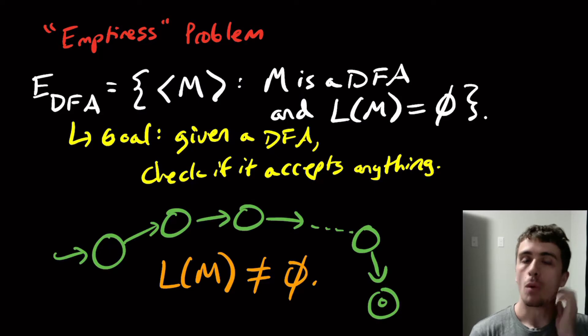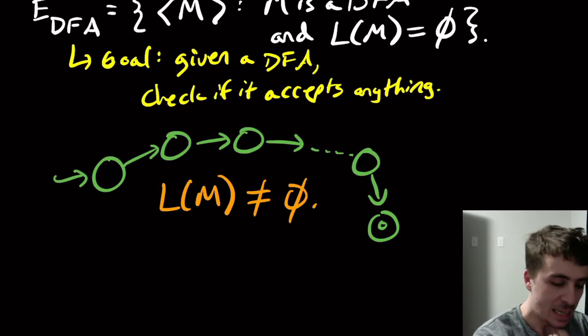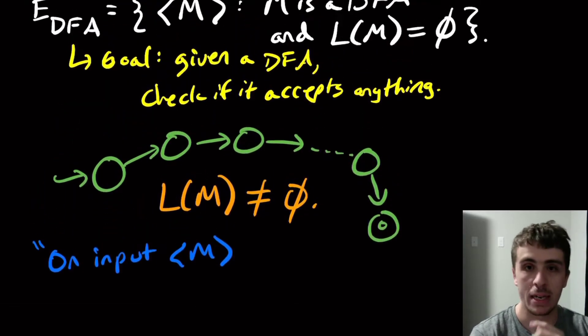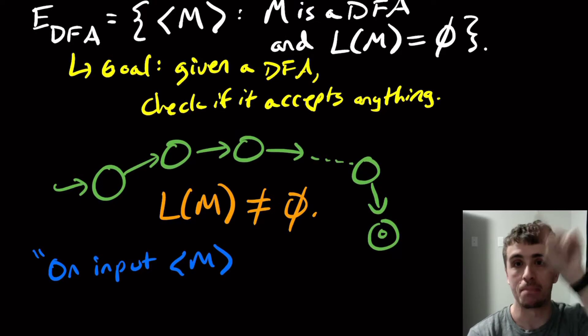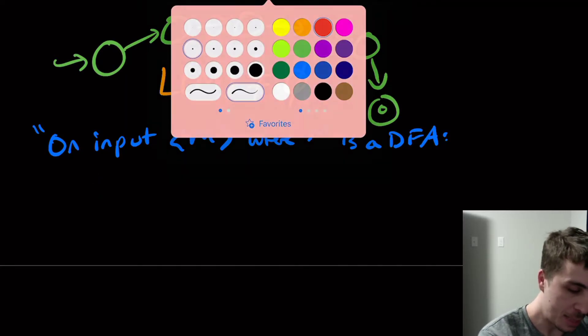So what we can do then is we can just check if there is a state reachable from the start state at all. And that's actually how we would solve this. So let's make a high level description here, on input M, so here it says M, not MW, because it has to match the language above, on input M, where M is a DFA.